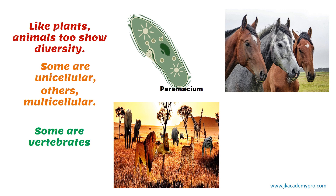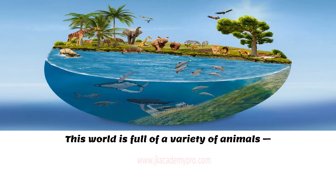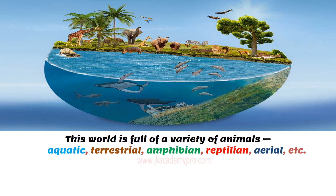Some are vertebrates, that is, they have a backbone, whereas others are invertebrates — most of the insects that we see are invertebrates. This world is full of a variety of animals. For example, we find aquatic animals, that is, animals that live in water; terrestrial, that is, animals that live on land; amphibians, that is, animals that live both on land and in water.